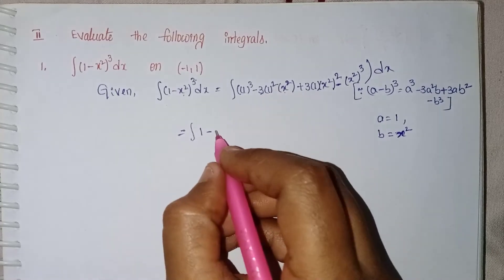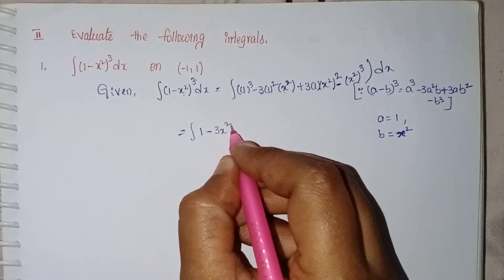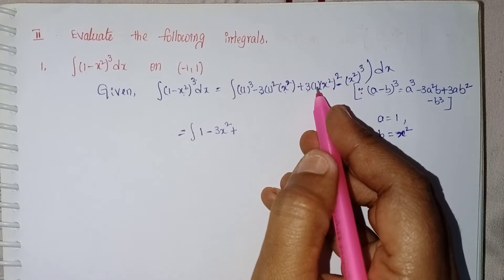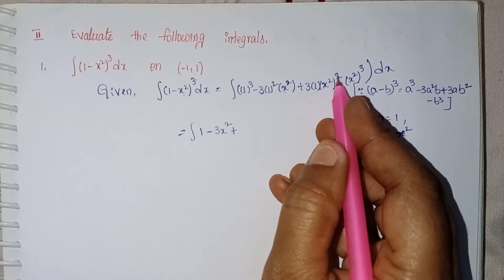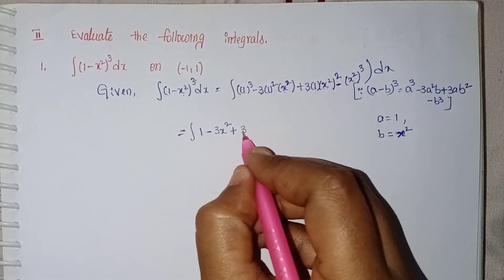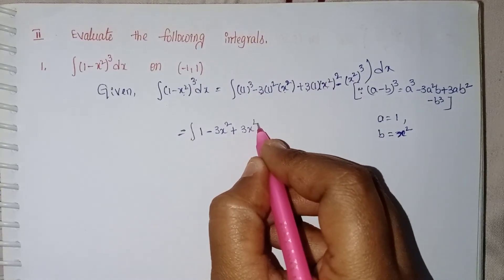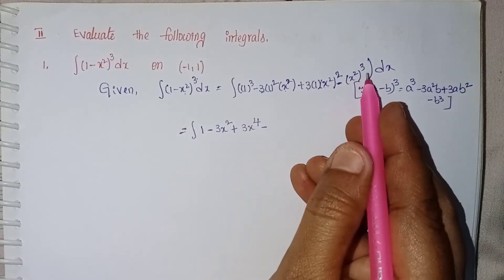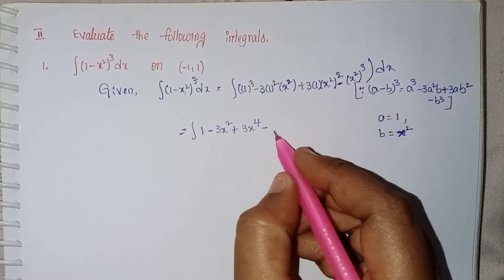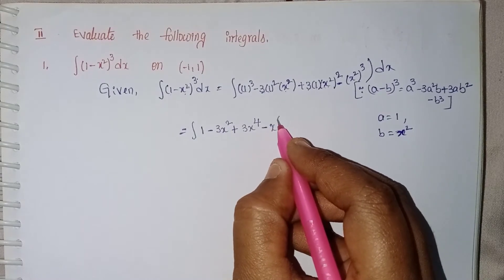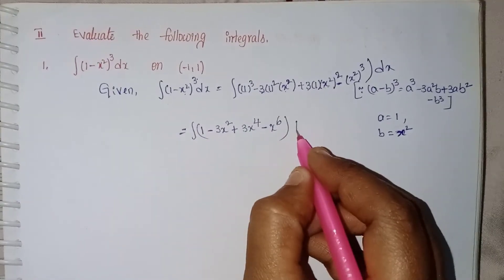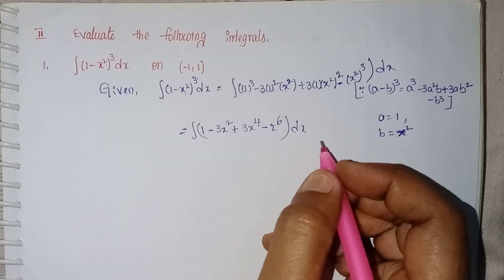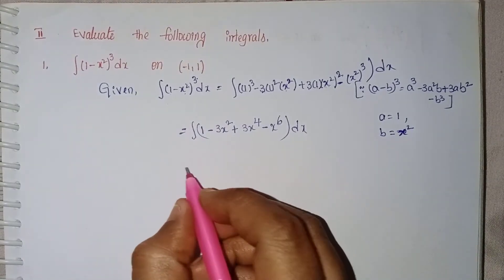Simplify: 1³ = 1, 1² = 1, so we get 1 - 3x² + 3x⁴ - x⁶, multiplied by dx.